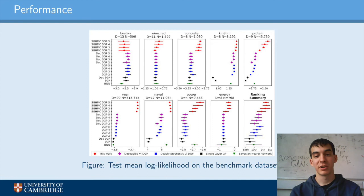Let's look at the performance on a few benchmark datasets ranging from smaller ones with 500 data points to larger ones with 500,000 data points. We can see that apart from the smallest dataset, SGHMC outperformed variational inference. The improvement is more significant for larger datasets, and on quite a few of them, we achieve a new state-of-the-art result.